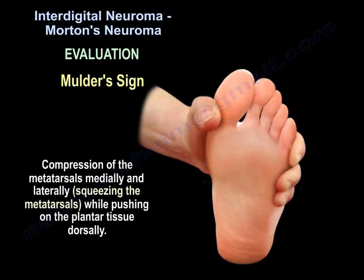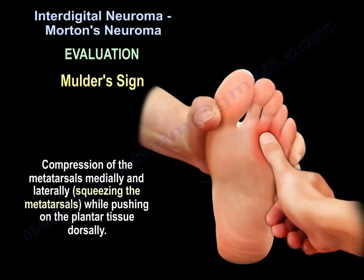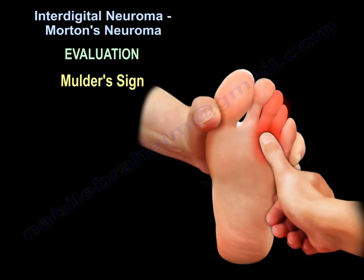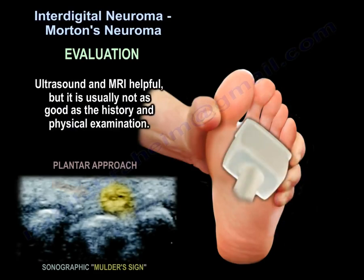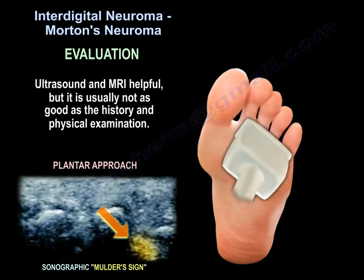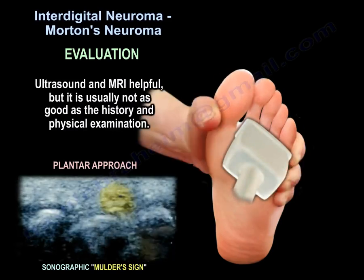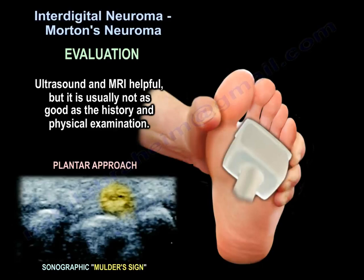Mulder's sign involves compressing the metatarsals medially and laterally — squeezing them — while pushing on the plantar tissue dorsally. The soft tissue may create a click, and if that happens, it is a classic positive test. Ultrasound and MRI are helpful but are usually not as good as the history and physical examination.